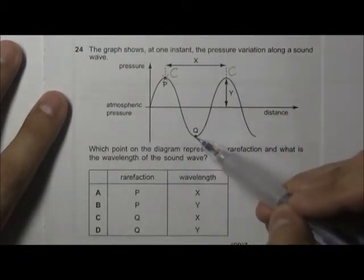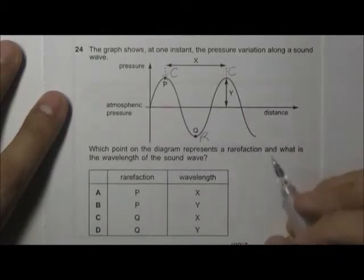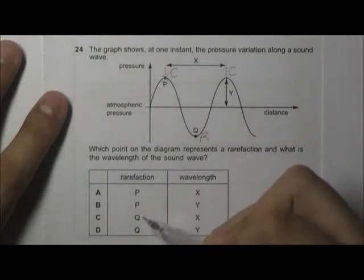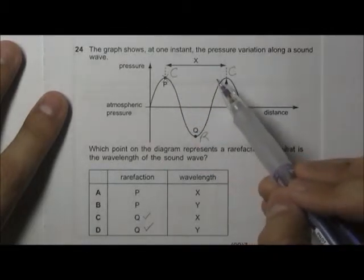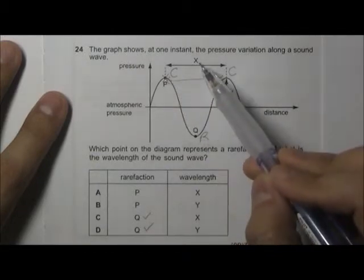And the point with the lowest pressure, it should be the center of rarefaction. Okay, so rarefaction is indicated by Q and the wavelength, it will be the distance from the compression to the next compression. So it will be indicated by distance X. So the answer should be C.